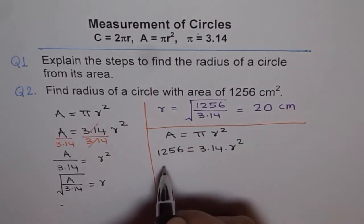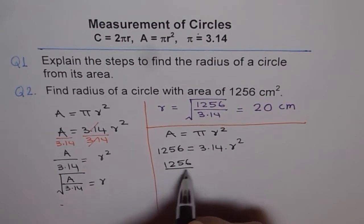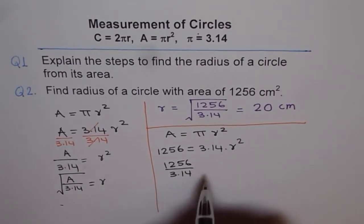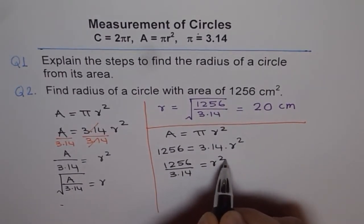Now let's divide by 3.14. So we get 1256 divided by 3.14 = r².